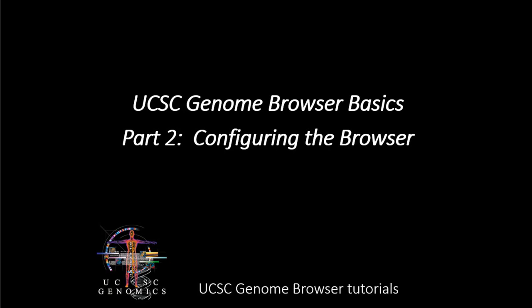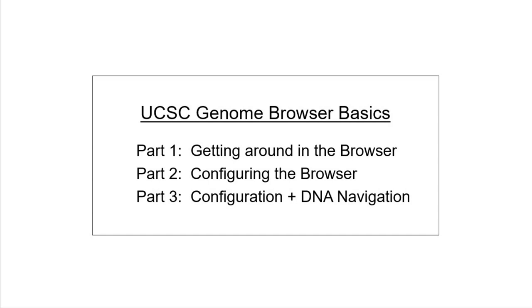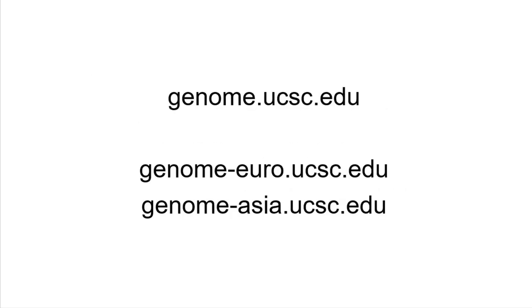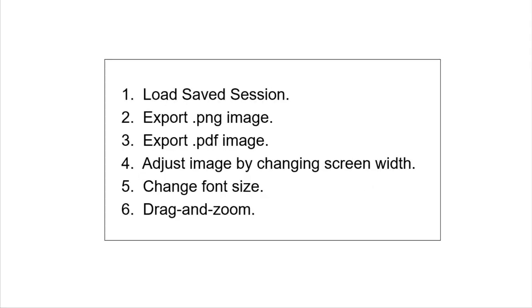Welcome to part two of the basic browser video series. In part one, we focused on the use of accession names and the many ways that identifiers of various kinds can be used to locate genomic locations and gene annotations. We also saw a few configuration options for setting up the browser. In this installment, we will focus on many more ways that the browser image can be configured to show the data the way you want it.